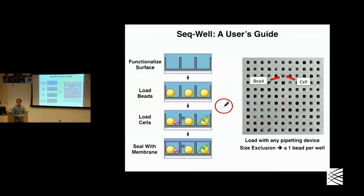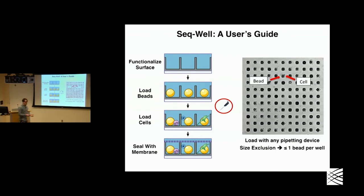After we've loaded our beads, we can do the same thing with cells — just pipetting cells directly onto the surface of the device, and cells fall in by gravity. While we have 86,000 wells, we're only applying about 10,000 cells. This allows us to have a limiting dilution and load our device according to Poisson statistics. So 90% of our wells have only a bead and no cell, 10% of our wells will have one bead and one cell, and we have about a 1% to 2% doublet rate, which is tunable based on the number of cells you load.